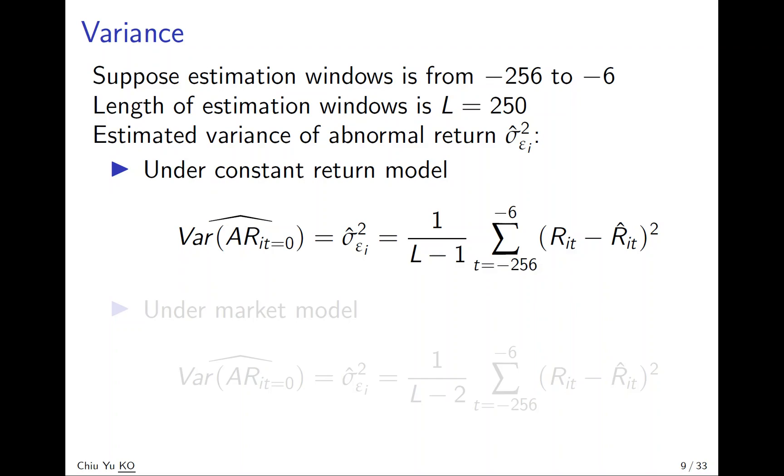For the market model, it's the same but you have minus two. Why minus two? Because you have two parameters. To have an unbiased estimator, you have to minus by two.